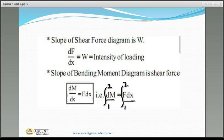For a simply supported beam carrying a point load at midspan: the reactions are W/2 and W/2 since the load is symmetrical. To determine shear force at any point, consider either the left or right side of that section. The shear force varies from 0 to +W/2 at point A, remains constant up to point C, drops by magnitude W at point C — indicating a point load — then remains constant to B, returning to 0.